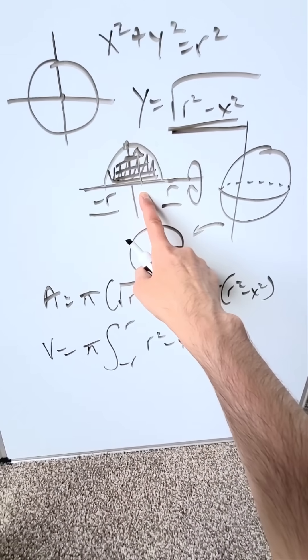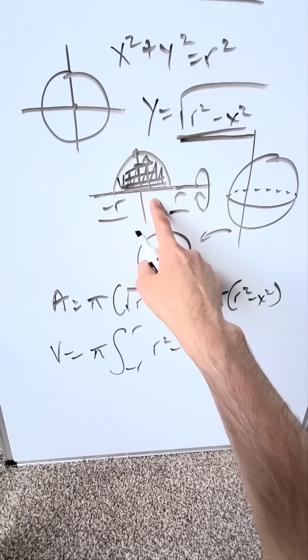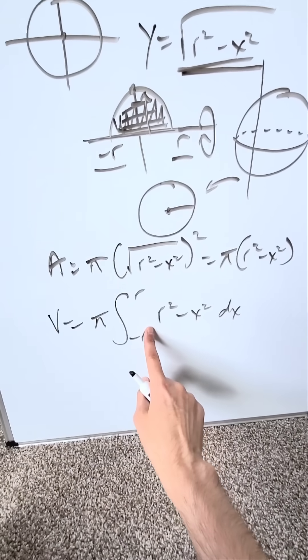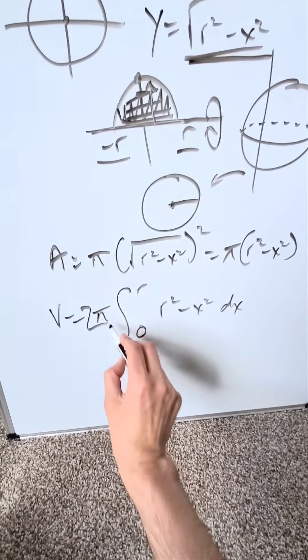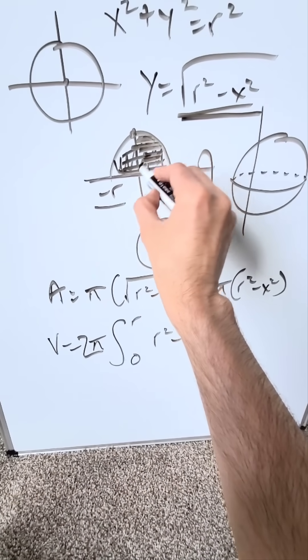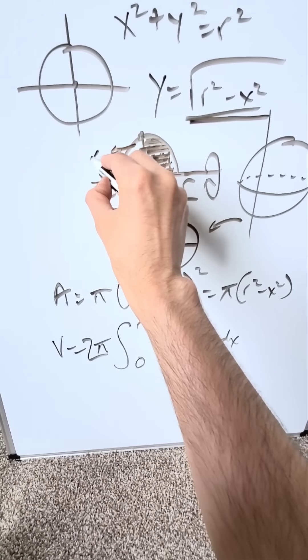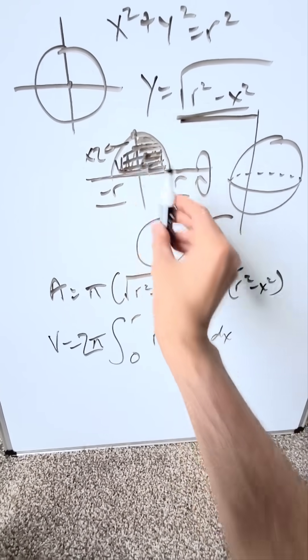You can bring in the even function properties of integrals because this is symmetric around the y-axis. You can say instead of minus r to r, you'll say zero to r and put a two. You're doubling it. You're in essence only looking at this part right here and then you're doing it times two to capture the other side on the y-axis.